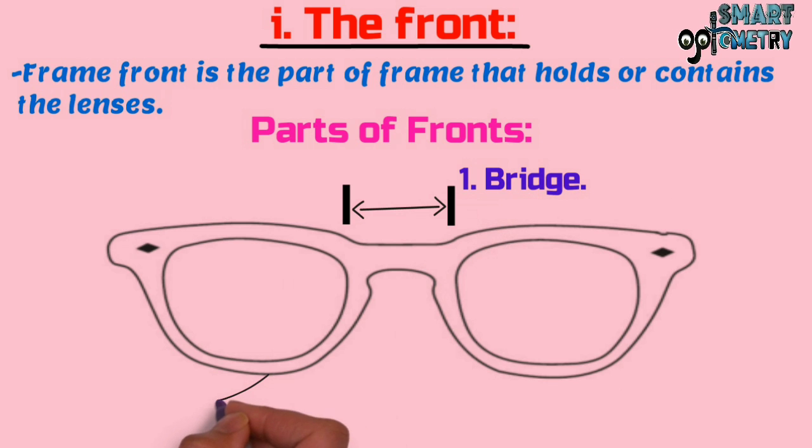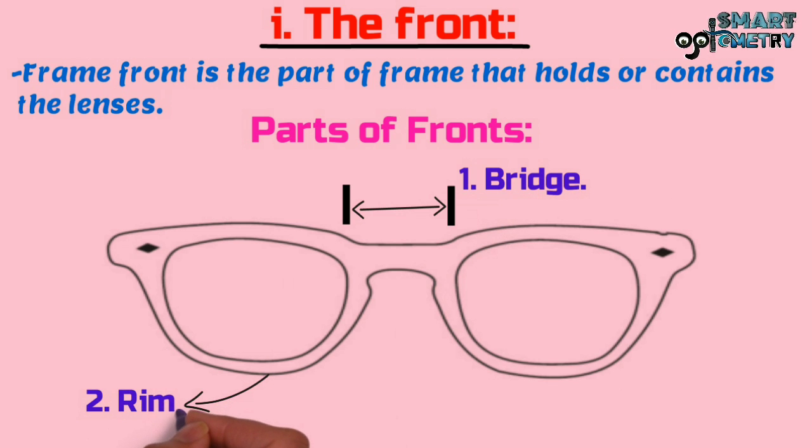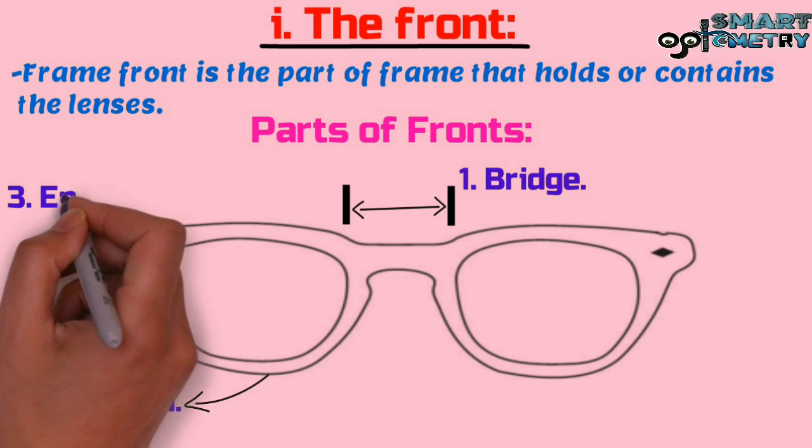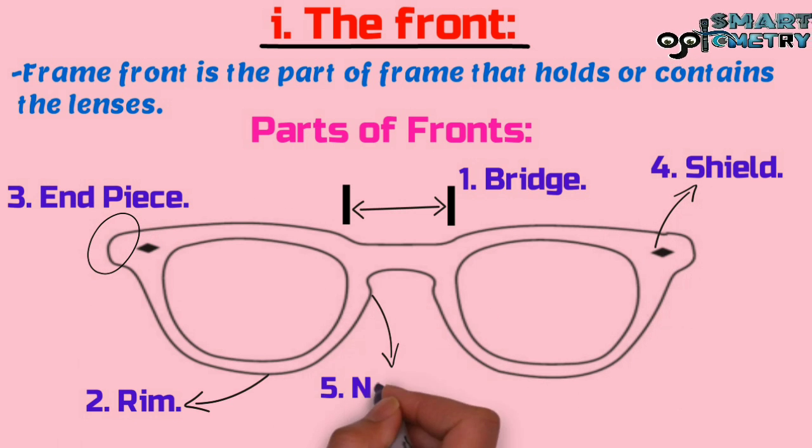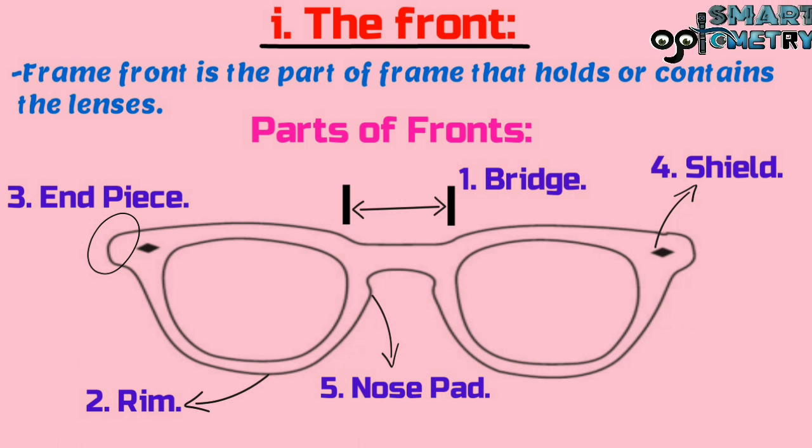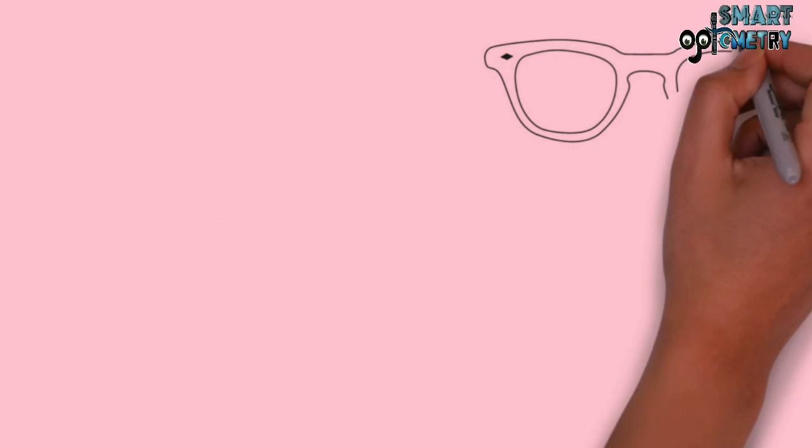One, bridge. Two, rim. Three, end bridge. Four, shield. Five, nose pad. Now let's discuss details about the parts of the front.